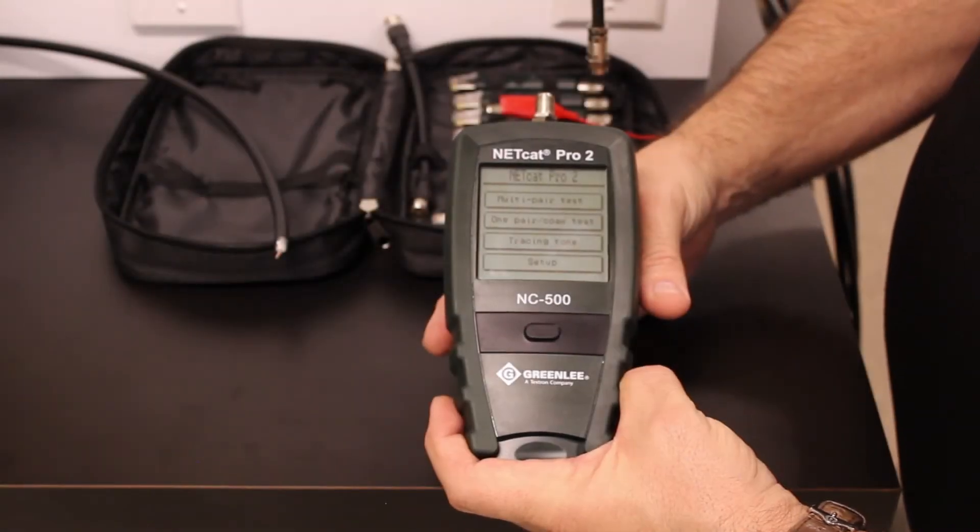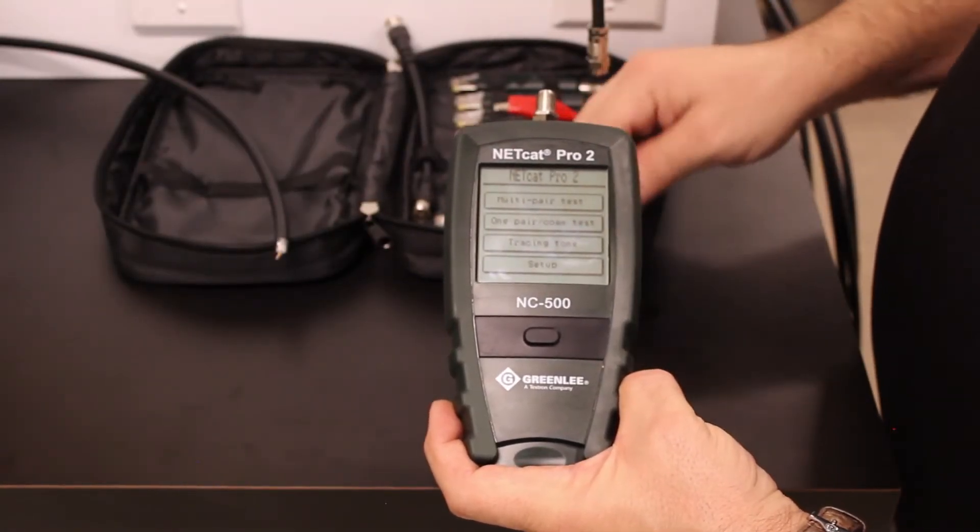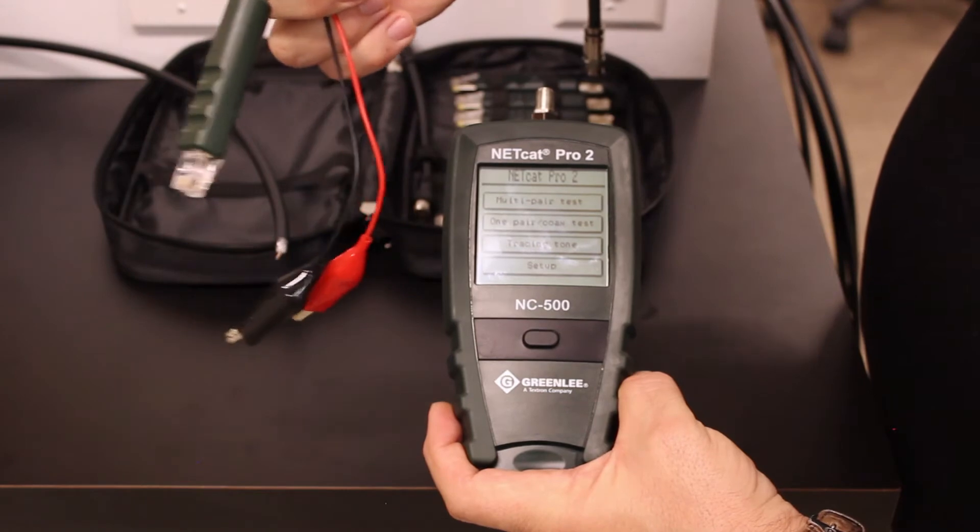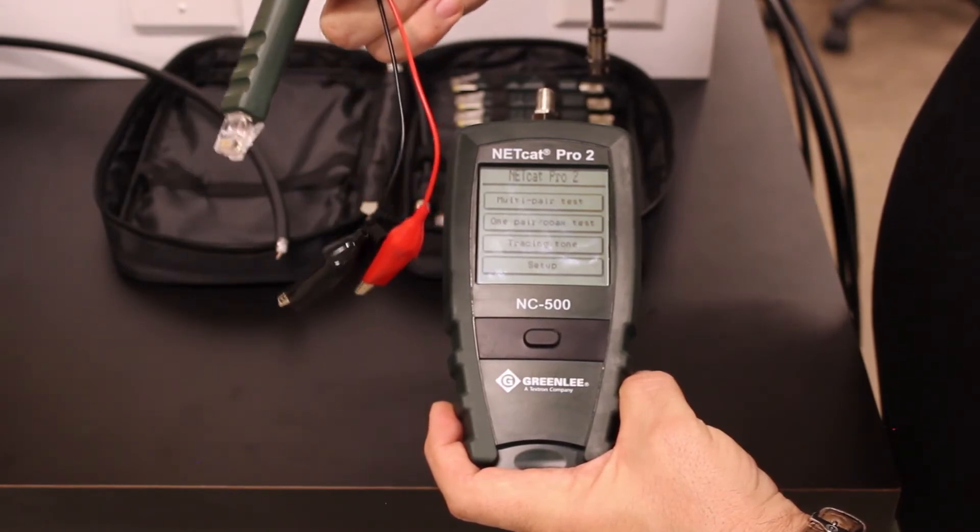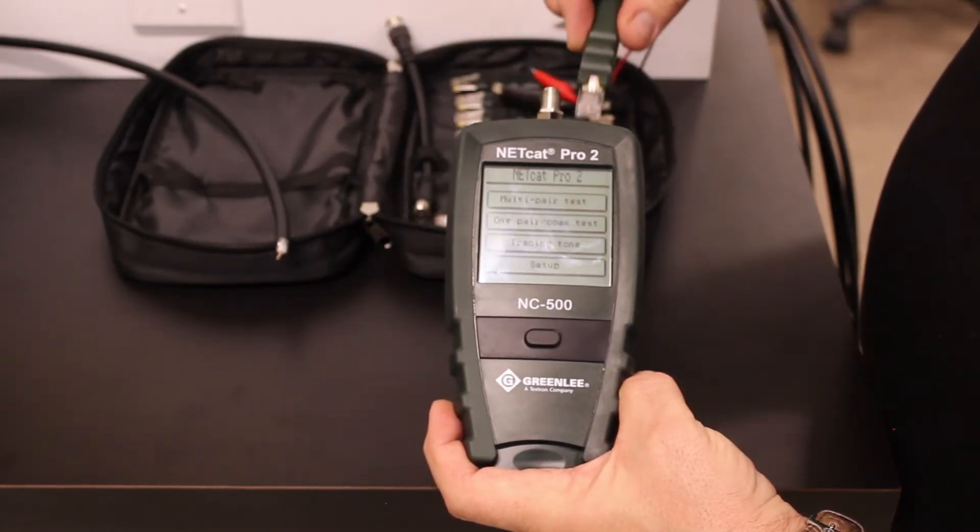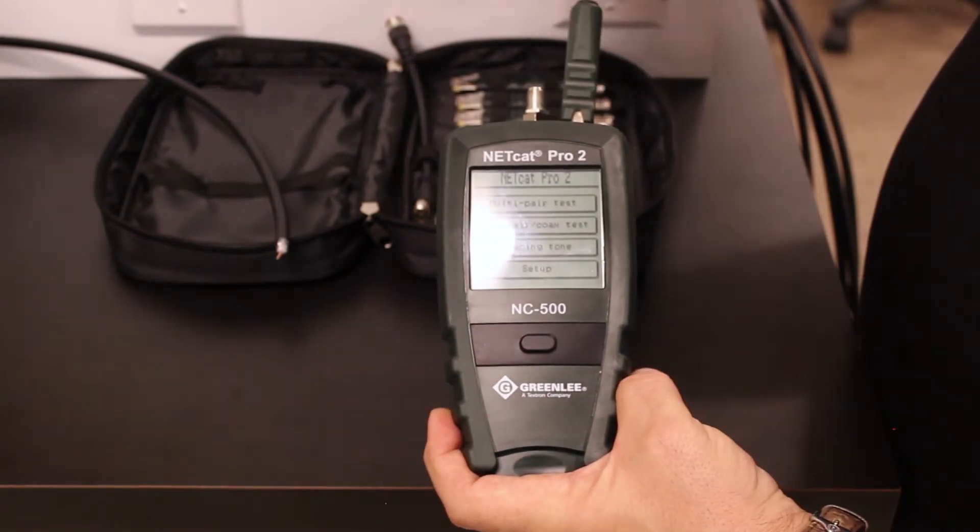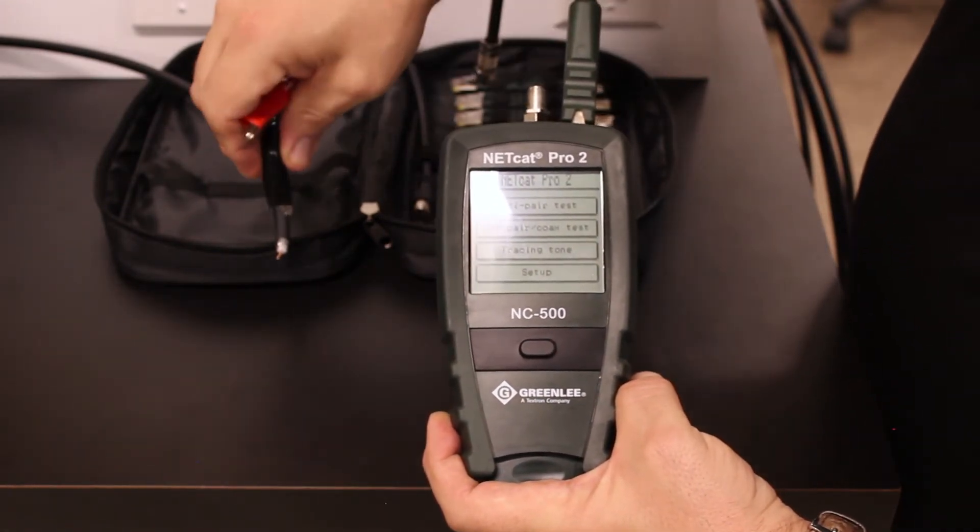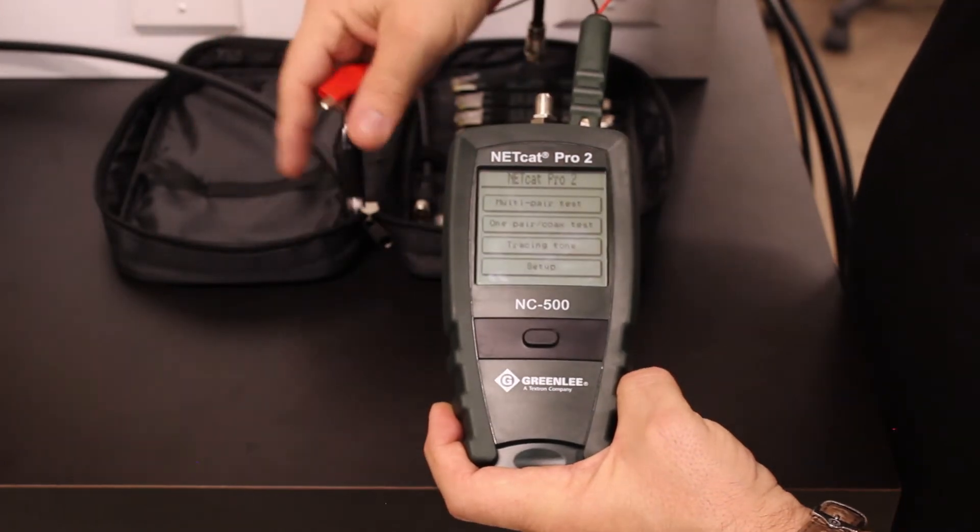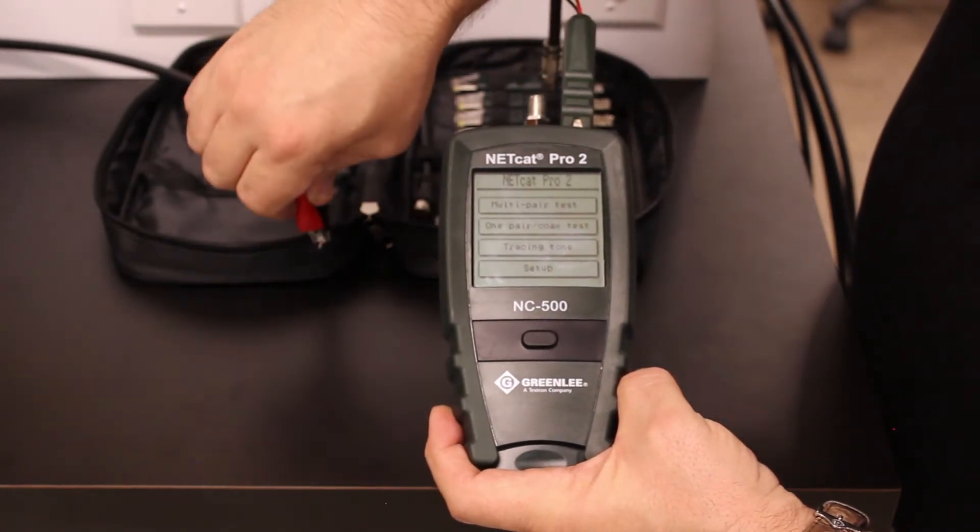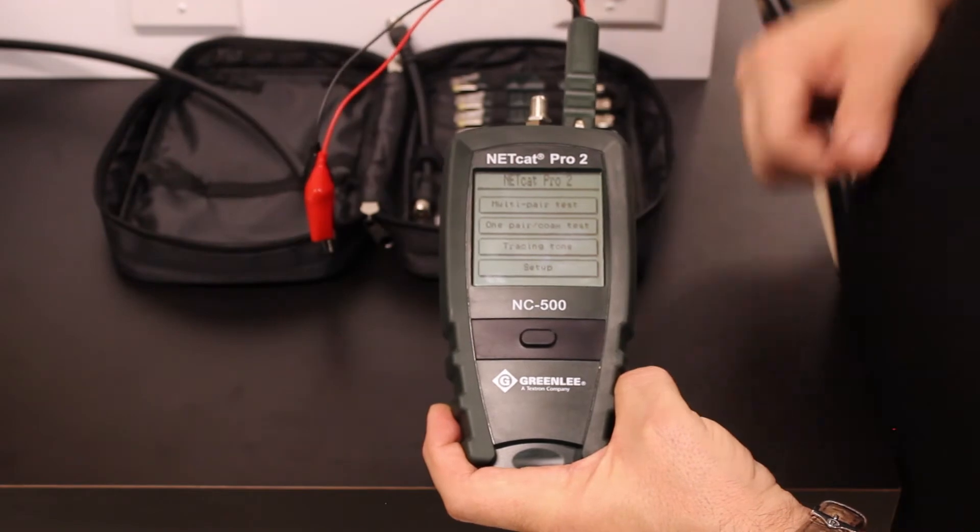To measure the length of an unterminated coax cable, you will need to use the red and black alligator clip test lead. Put it into the RJ45 port located in the top. Connect the black lead to the shield of an unterminated coax cable, the red lead to the center conductor.